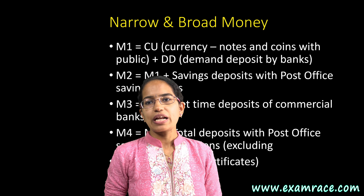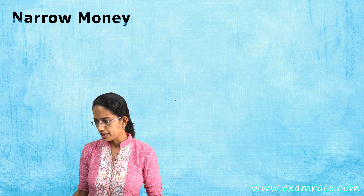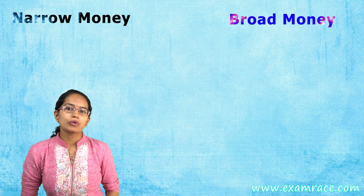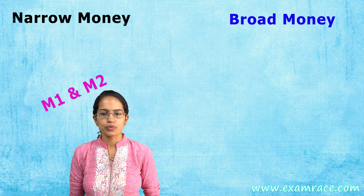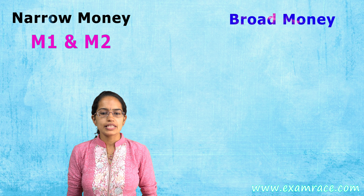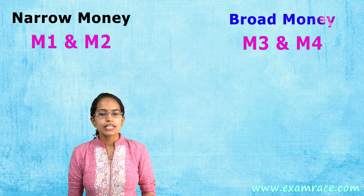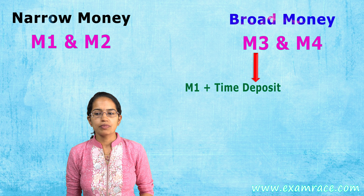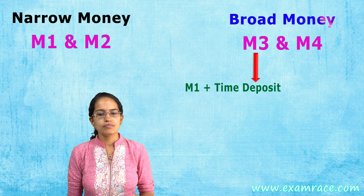In this lecture we will understand what narrow money is versus broad money. When we say narrow money, we usually talk about M1 and M2, as you can see here. Broad money refers to M3 and M4, of which M3 is the most commonly used measure in money supply terms.